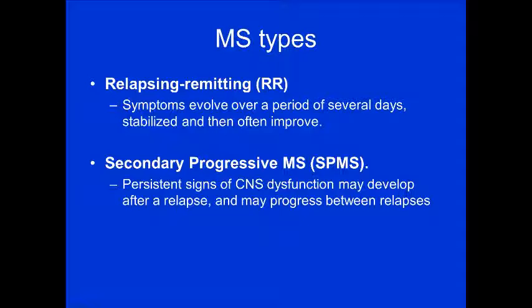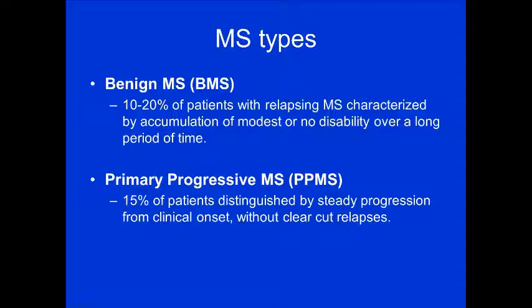Secondary progressive MS involves persistent signs of CNS dysfunction that may develop after relapse and may progress between relapses. Benign MS, in approximately 10–20% of patients, is characterized by accumulation of modest or no disability over a long period of time — they may have MS but show no disability. Primary progressive MS, in about 15% of patients, shows a steady progression from clinical onset without any clear relapses.